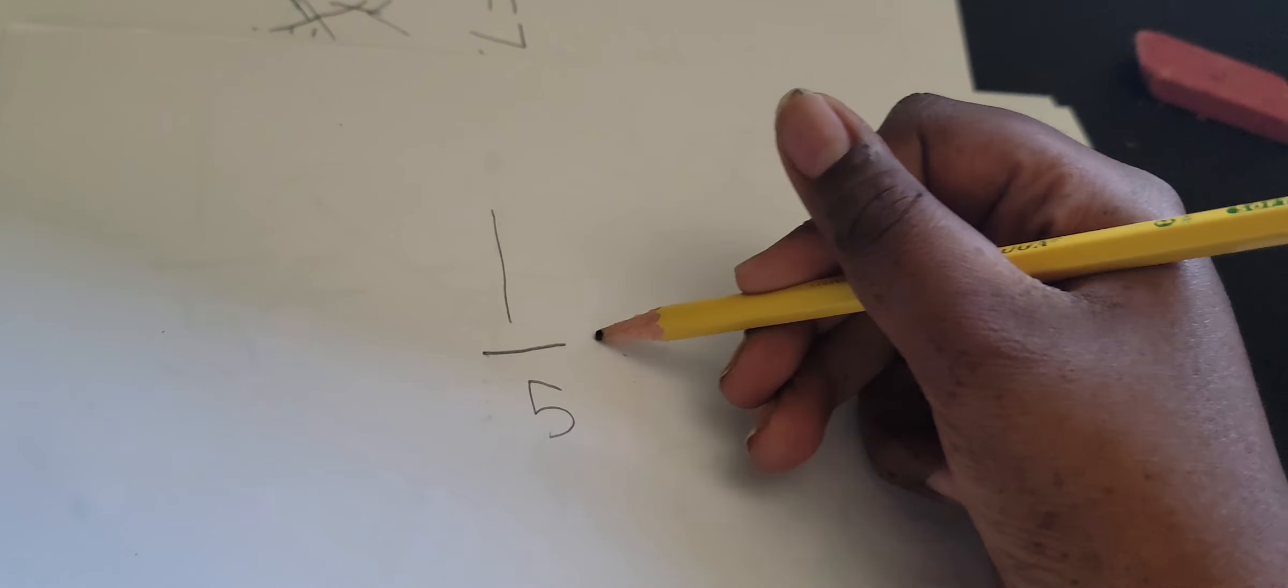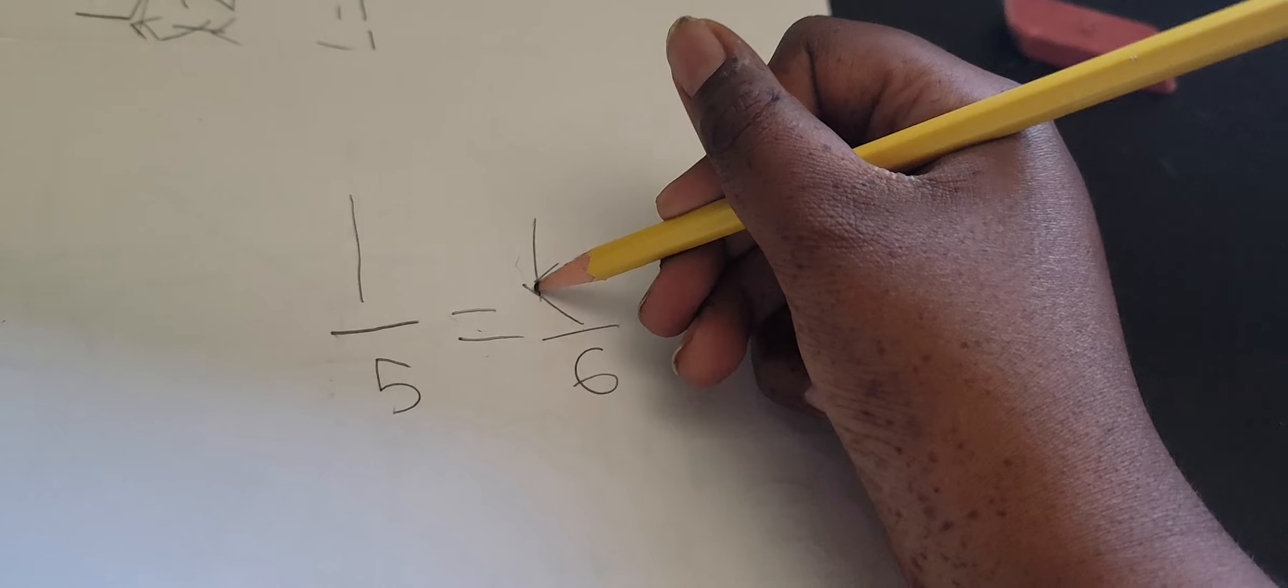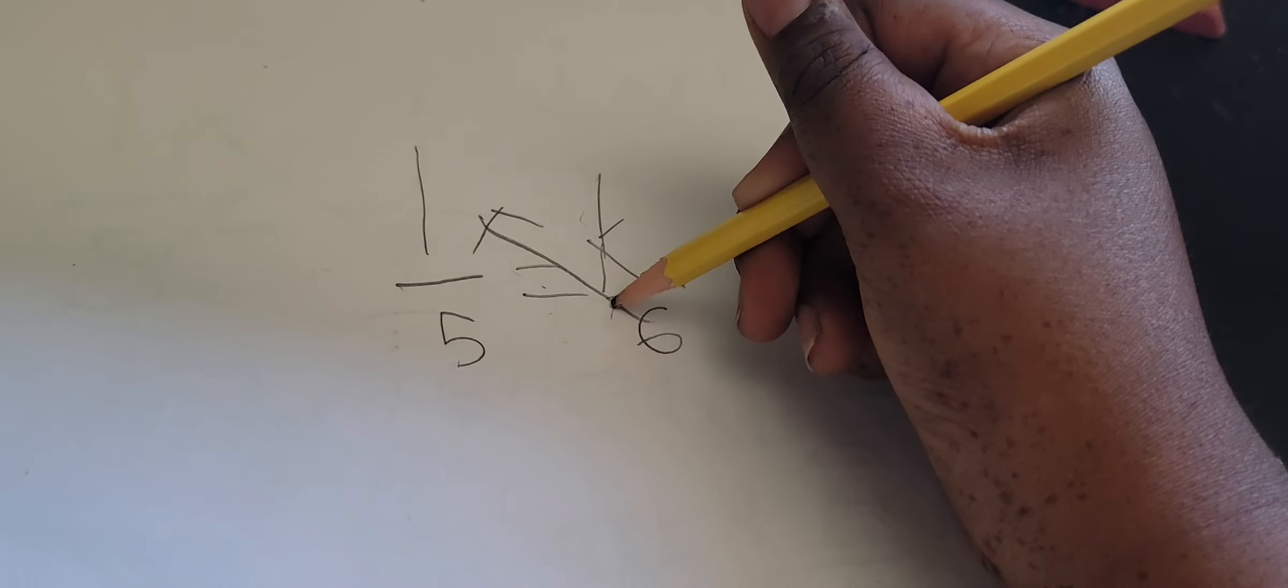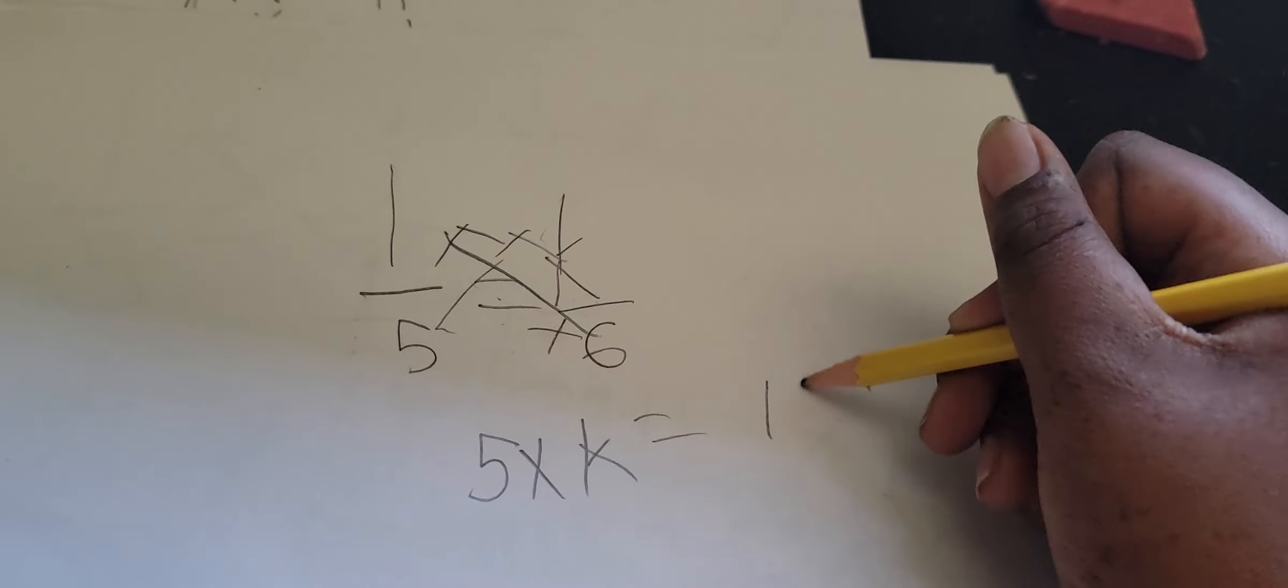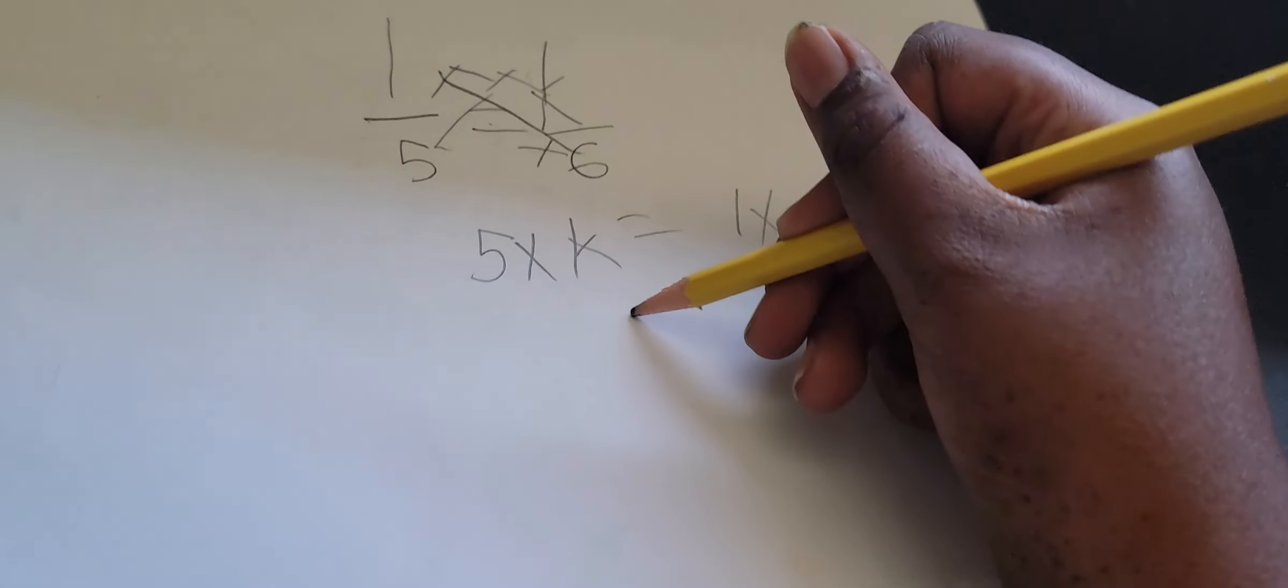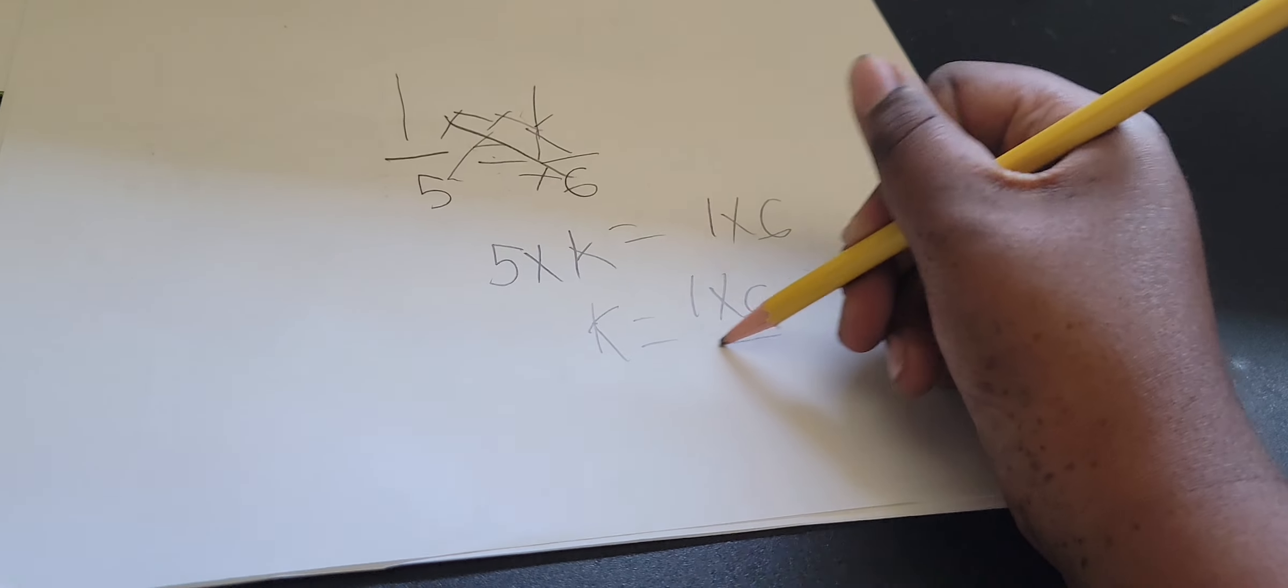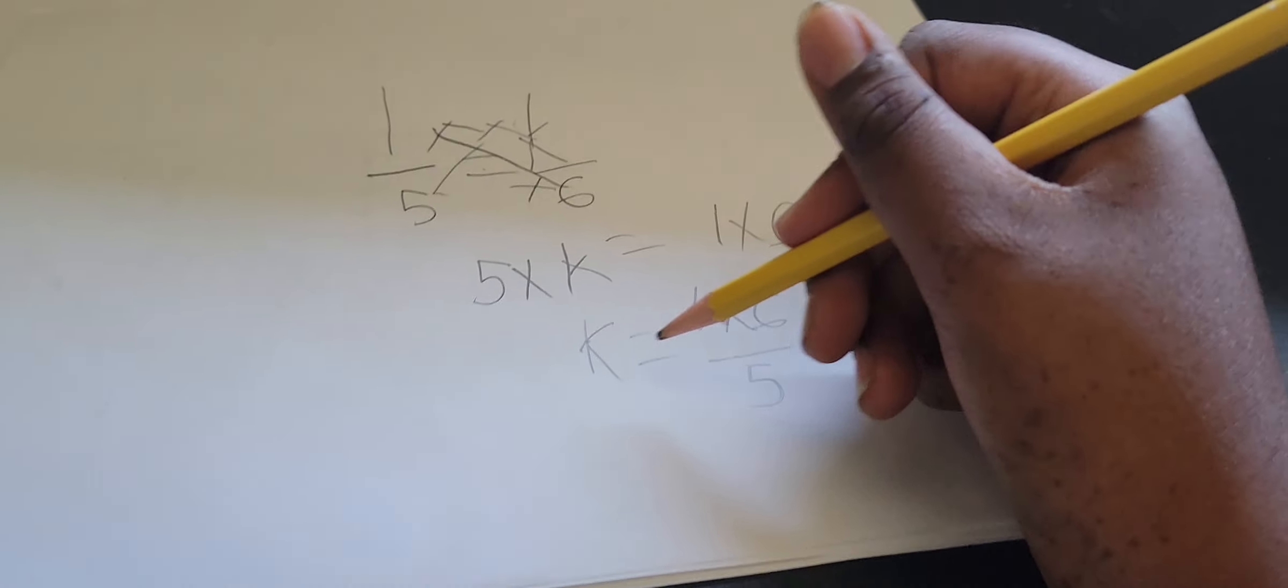Fraction one. Fraction two. We don't know it. We will put a K. First cross it out. 5 times K is equal to 1 times 6. K is equal to 1 times 6 by 5. So, the answer is 6 by 5.